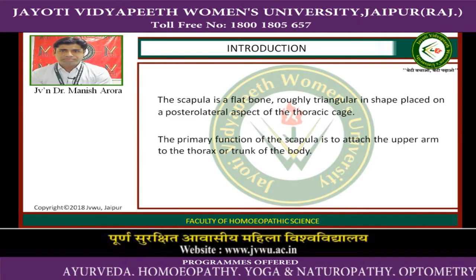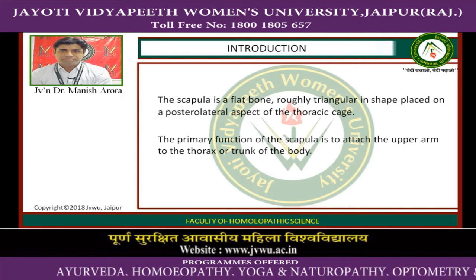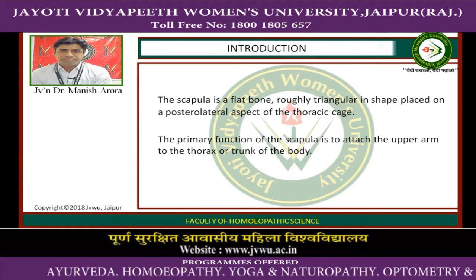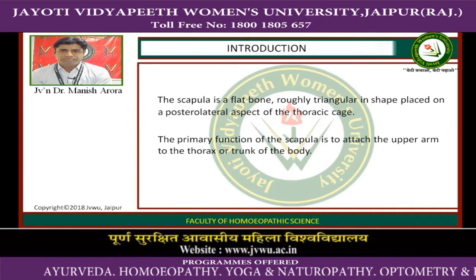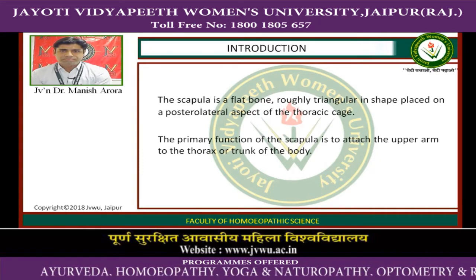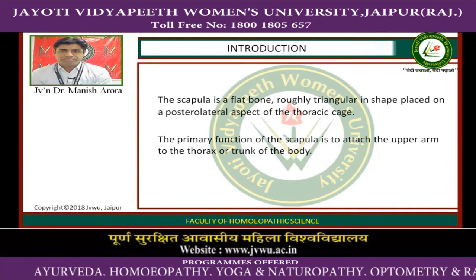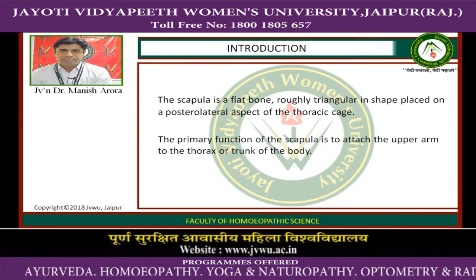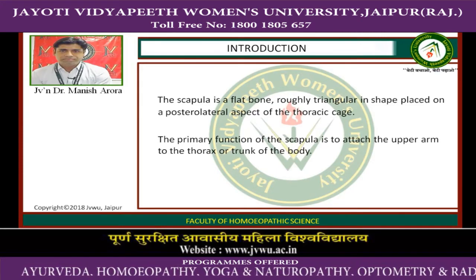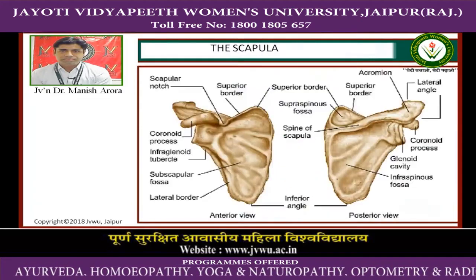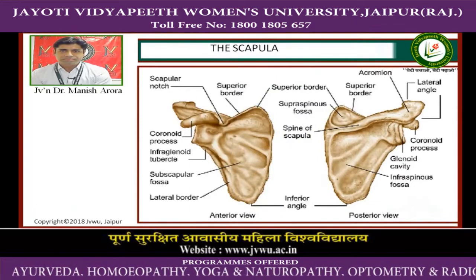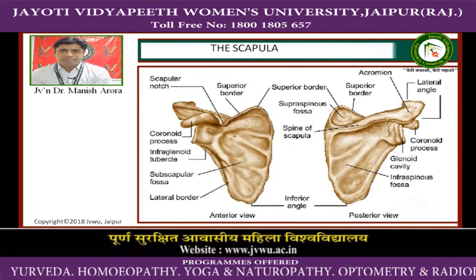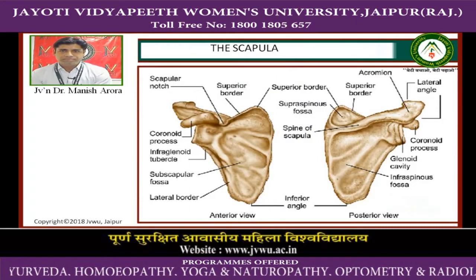Introduction: The scapula is a flat bone, roughly triangular in shape, placed on the posterior lateral aspect of the thoracic cage. The primary function of the scapula is to attach the upper arm to the thorax or trunk of the body. This is the picture of scapula, showing its costal and dorsal surface.